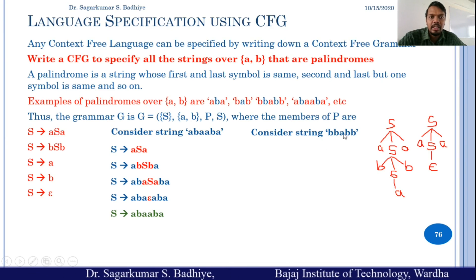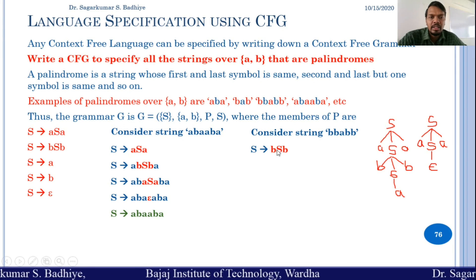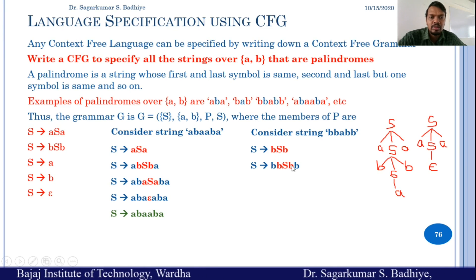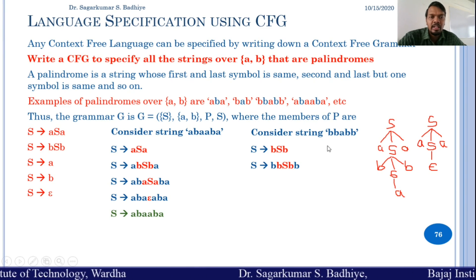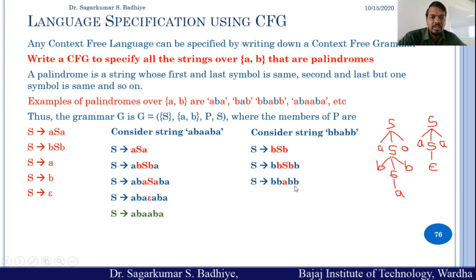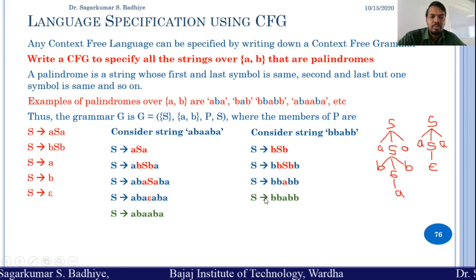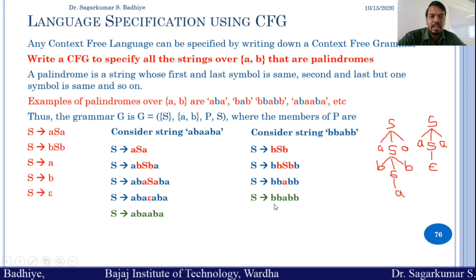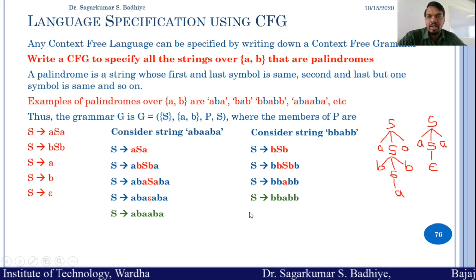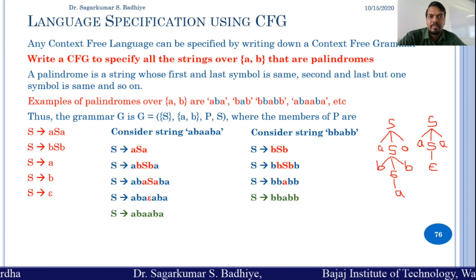Consider another example: the string B B A B B. For this, we start with S → B S B. Then we replace S again with B S B. Finally, we want a single A in the middle, so we use S → A. We get the string B B A B B, which is a palindrome — it reads the same from the front and from the back. This is an example of writing a context-free grammar for palindromes over A and B.